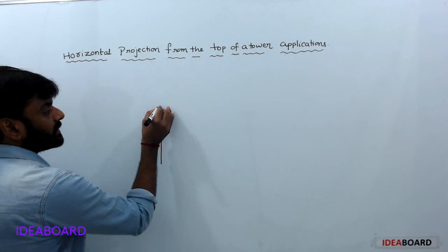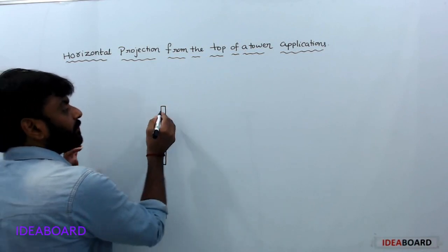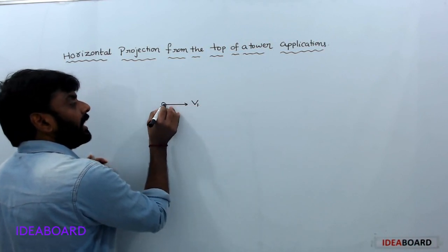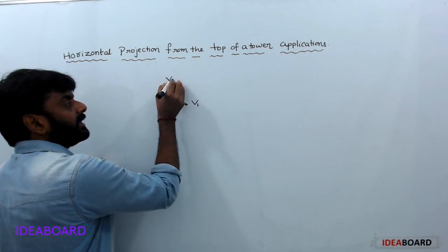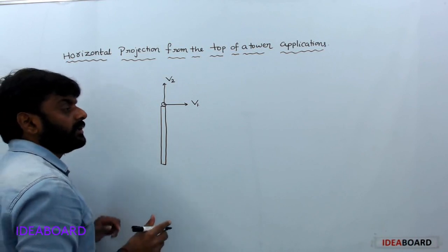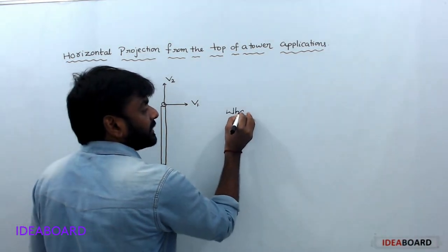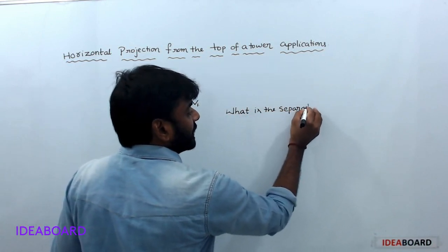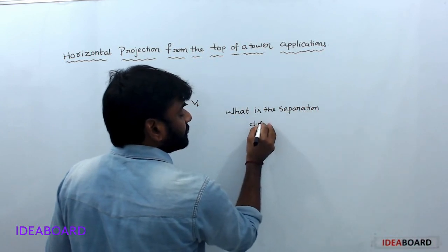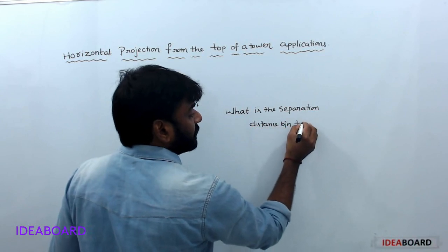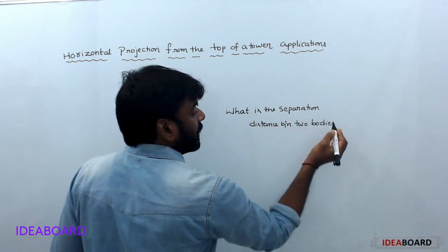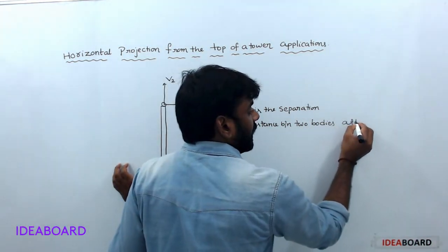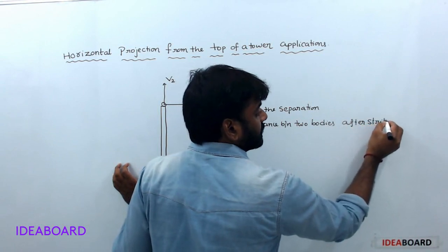Here two bodies are projected. One is along the horizontal direction with velocity V1, and another one is projected vertically upwards with velocity V2. The required quantity is: what is the separation distance between the two bodies after striking the ground?